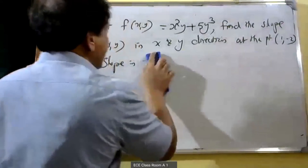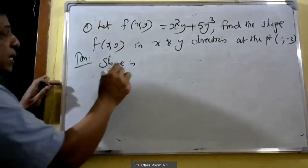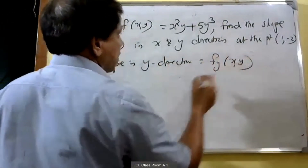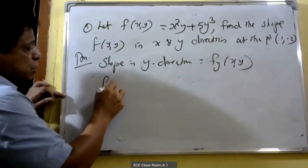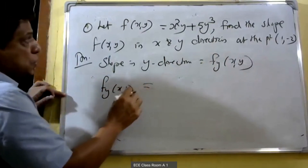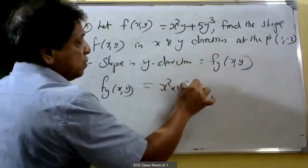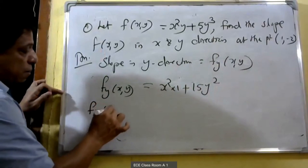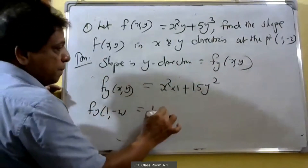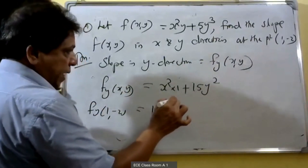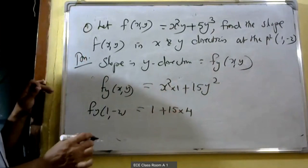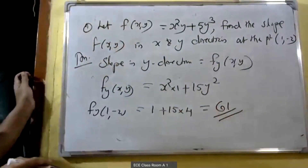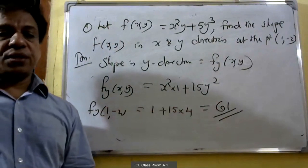Similarly, we can find the slope in the y direction. Slope in the y direction equals fy(x,y). Partially differentiating with respect to y: x² is constant, so x² into 1 plus 15y². Then fy(1,-2): substituting x=1 gives 1 plus 15 into (-2)² = 1 plus 15 into 4 = 61. Therefore the slope in the y direction is equal to 61.